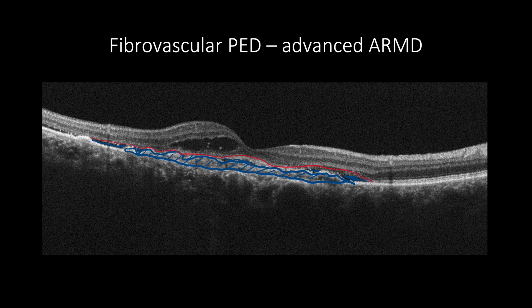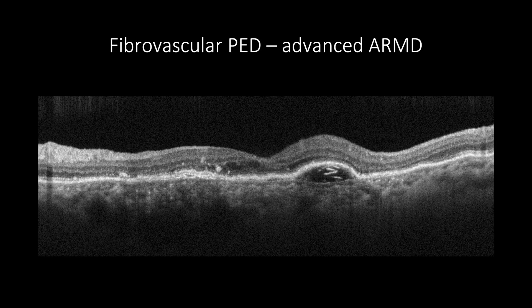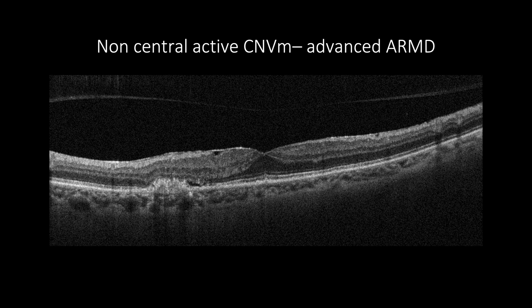Often there would be an increase in retinal thickness and intraretinal cystic formation. Sometimes fibrovascular PED may have horizontal hyperreflective parallel lines, which indicates exudation from the fibrovascular CNV. OCT is a very useful tool to detect the location of the CNV — as in this case there is an active fibrovascular PED with subretinal fluid, all located non-centrally.